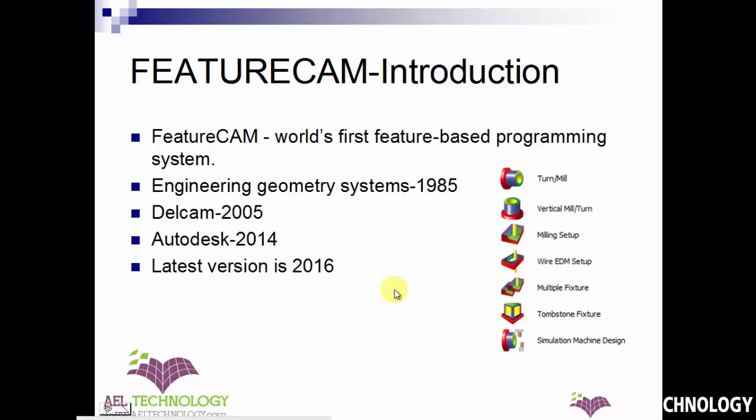FeatureCam is the world's first feature-based programming system. Unlike other CAM software where you create a 3D model, then finalize which tool to use, define a strategy, and create a toolpath, in FeatureCam when you create a feature, the toolpath is simultaneously produced. You can even create the roughing, semi-finishing, or finishing toolpath at the same time, making this software a very attractive and leading feature-based CAM program in the market.